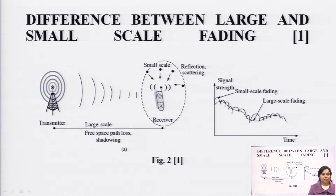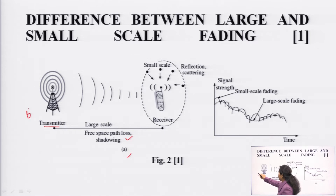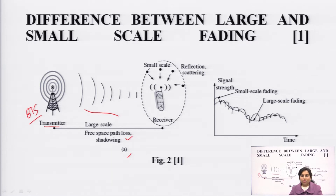What is the basic difference between large scale and small scale fading? This diagram shows the difference. In diagram A, the distance between the transmitter and receiver is quite large, so it undergoes free space path loss and shadowing. This is the transmitter, which is a BTS — base transceiver station — and it radiates the signal. This is known as the forward channel. In mobile communication, there are two types of channels: forward channel, where the signal is transmitted from the base station to the mobile, and reverse channel, where the signal is transmitted from the mobile to the base station.